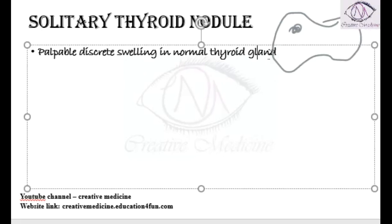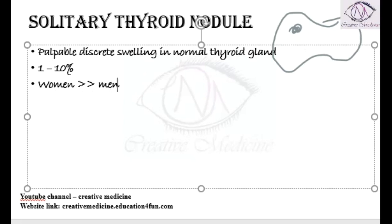Solitary thyroid nodule is seen in around 1 to 10% of cases. This solitary thyroid nodule is more common in women than in men — the ratio is around 4 is to 1, so it is 4 times more common in women than in men.